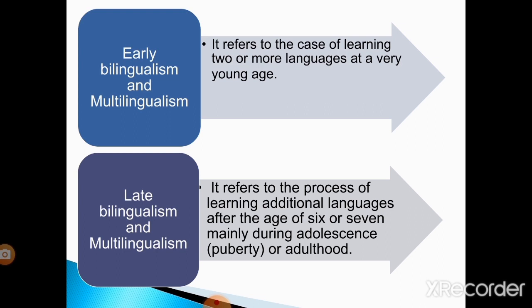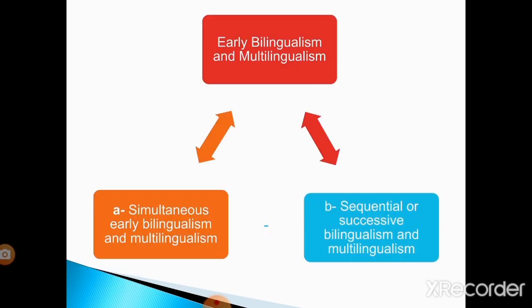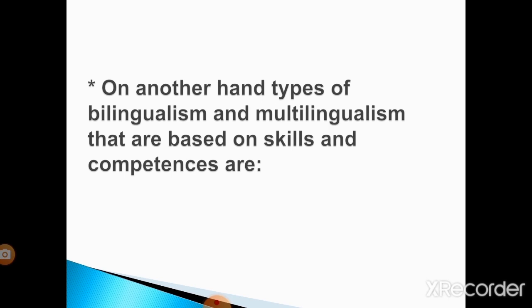For late bilingualism and multilingualism, it refers to the process of learning additional languages after the age of six or seven, mainly during adolescence, puberty, or adulthood. This type is consecutive and happens after the acquisition of the first language, after the critical sensitive period, and this is what distinguishes it from early bilingualism and multilingualism. On the other hand, there are also types of bilingualism and multilingualism based on competences and skills.